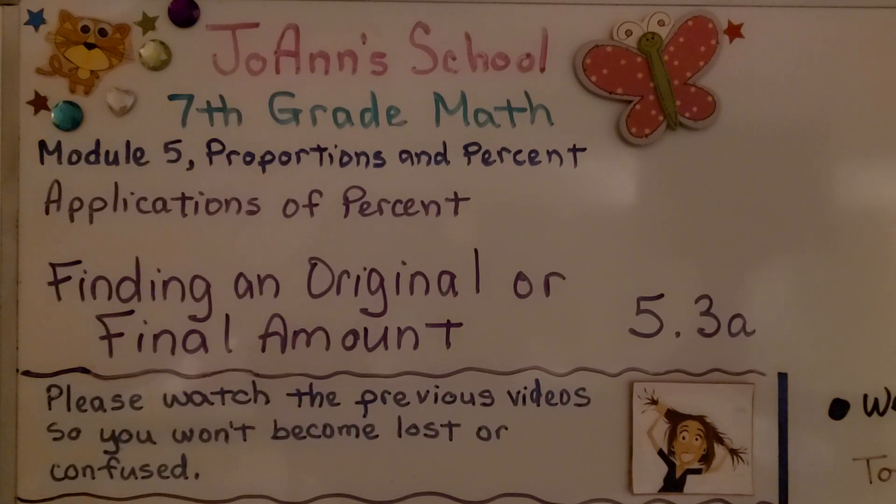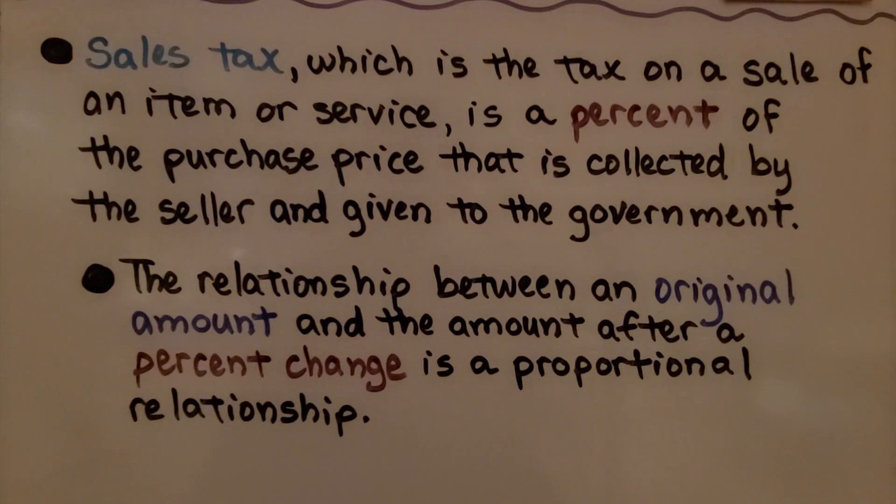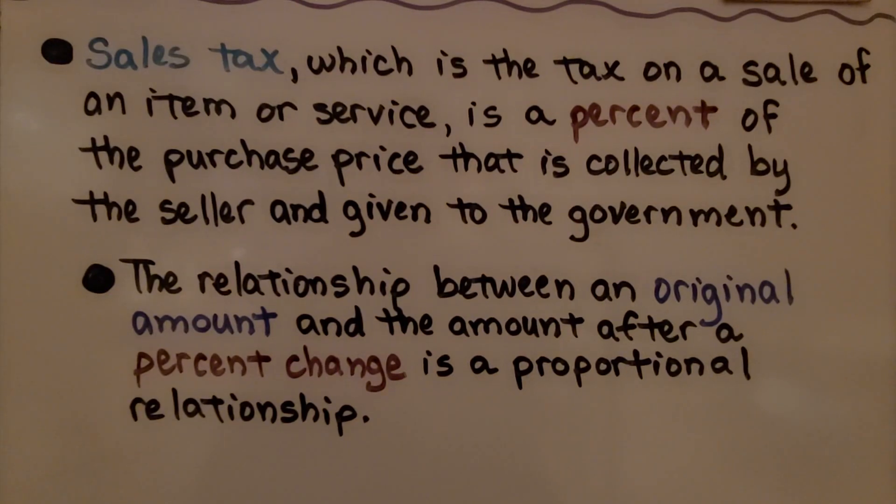Lesson 5.3a, Finding an Original or Final Amount. Sales tax, which is the tax on the sale of an item or service, is a percent of the purchase price that is collected by the seller and given to the government. The relationship between an original amount and the amount after a percent change is a proportional relationship.